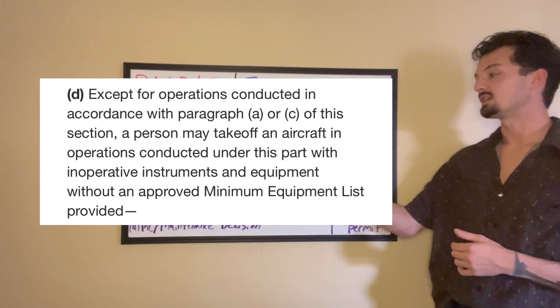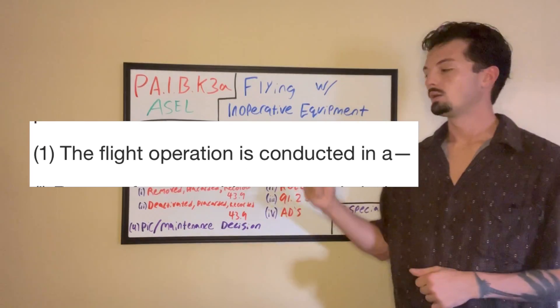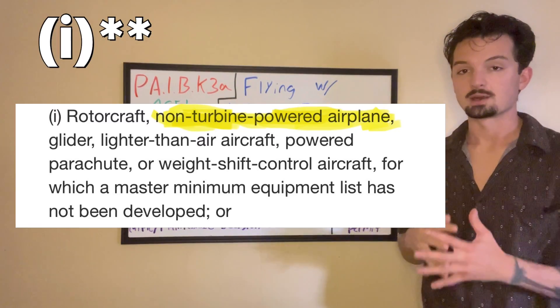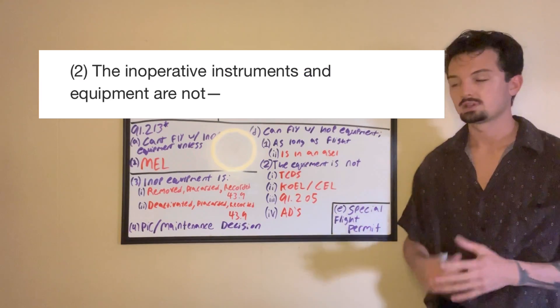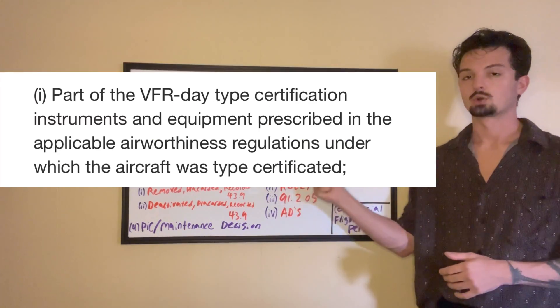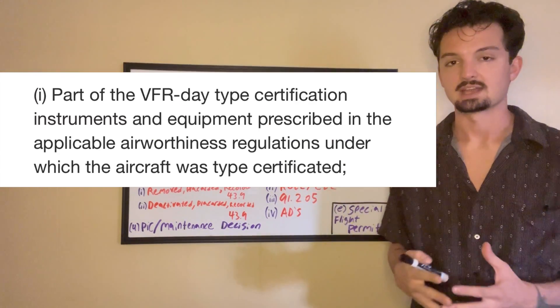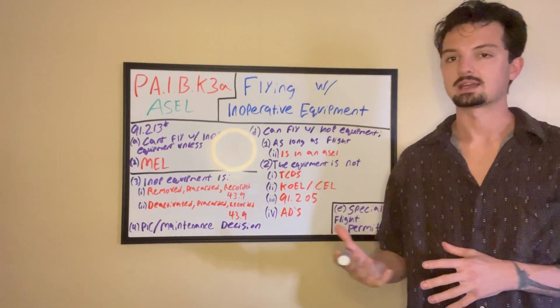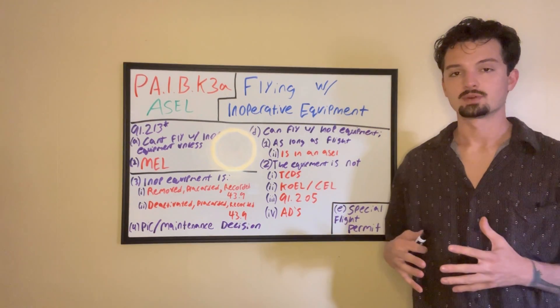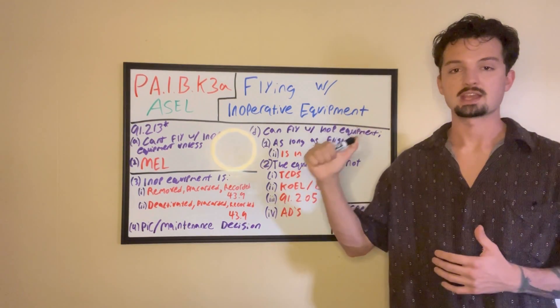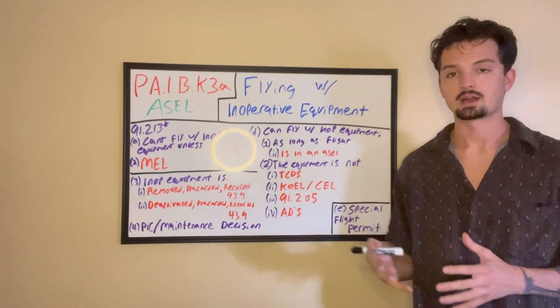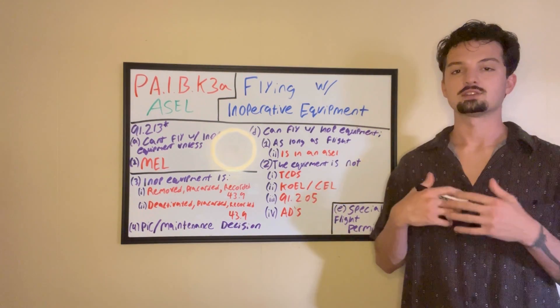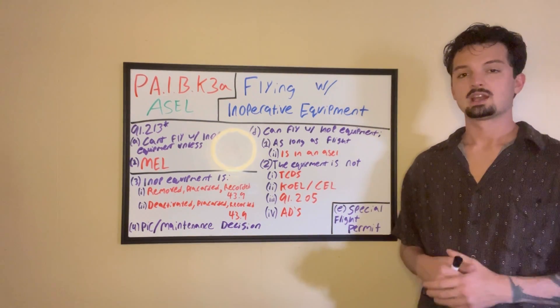which states that you can fly with inoperative equipment. One, as long as the flight is in an airplane, single-engine land. And two, the equipment is not required by our type certificate data sheet. So the type certificate data sheet can be thought of as kind of a birth certificate for a plane. It has a lot of important information like the dimensions, the limitations, different parts that are required. And so if you have a piece of equipment that is required by our type certificate data sheet, then you cannot fly without it.